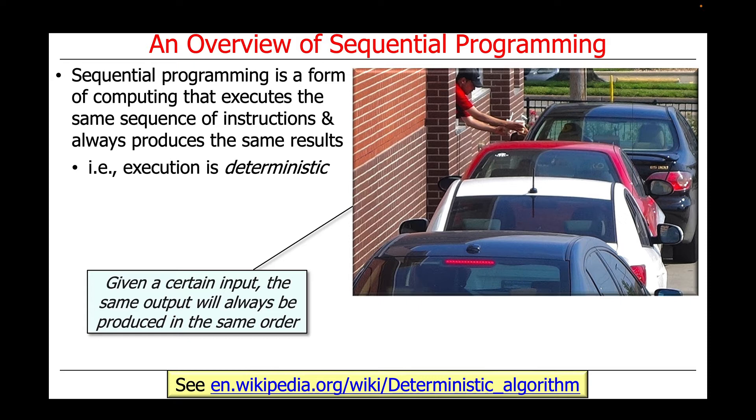Then they drive forward after the order has been placed and either pay at a window or maybe pay at one window, pick up at a different window. It's all very sequential and given the input of cars, the output will always be the same. So it's very linear, very deterministic.